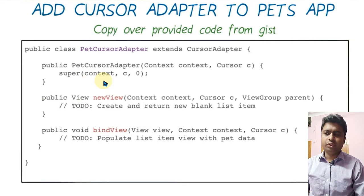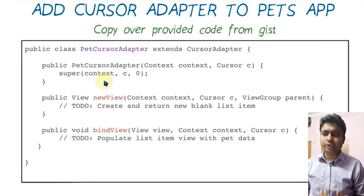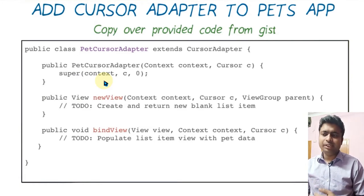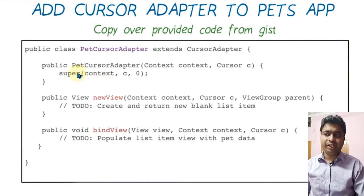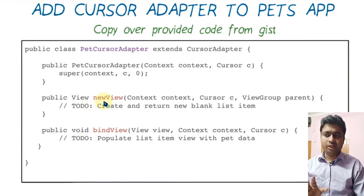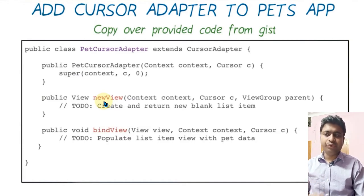We can use the adapter through one custom class. We have initialized it so that there is no problem. Why do we have the constructor called? Basically when we initialize, it is because with wrong initialization we cannot use it. This is a child class that uses the parent class. Right after that we have two methods: public View newView and bindView.